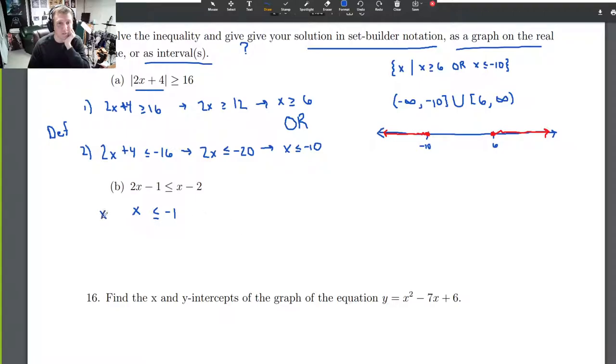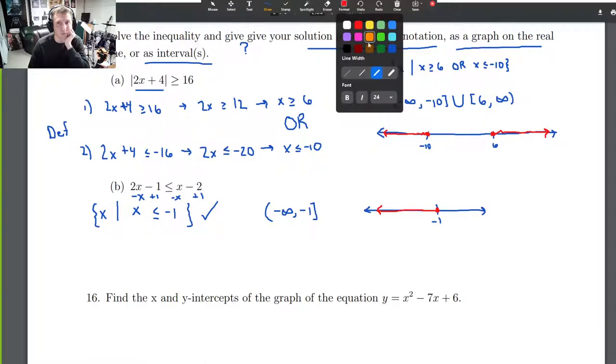In set builder notation, it's the set of all x such that x is less than or equal to -1. That's it. As an interval, it is negative infinity to -1 inclusive. As a graph on the real number line, here's -1 with a closed circle, and we go to the negative infinity direction. That's it.